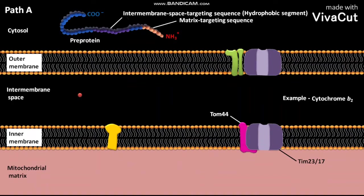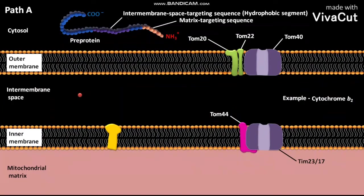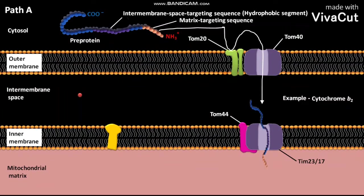The outer membrane of mitochondrion has transmembrane proteins like TOM20, TOM22, and a translocation channel TOM40. In the first step, the cytochrome B2 pre-protein, with the help of TOM20, TOM22, and TOM40, is completely translocated and reaches the intermembrane space.